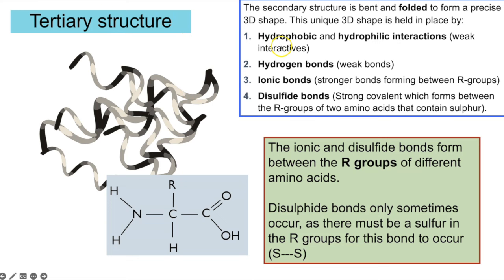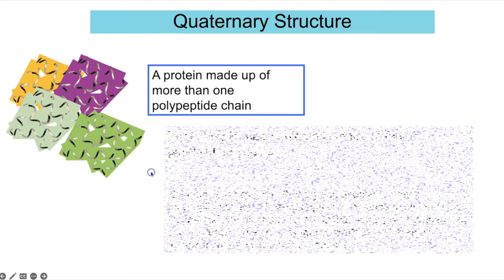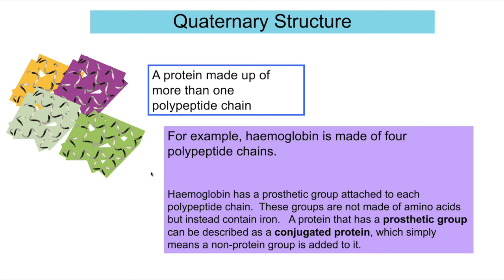The location of those bonds is determined by the sequence of amino acids in the primary structure, and where they form determines how the protein folds and the unique 3D shape it creates. The quaternary structure applies to proteins made of more than one polypeptide chain bonded together. For example, haemoglobin is made up of four polypeptide chains. Each chain has a prosthetic group — the haem group — which contains iron and is where oxygen binds.